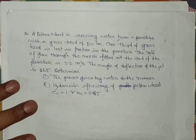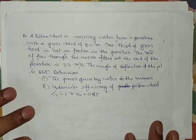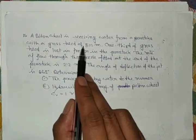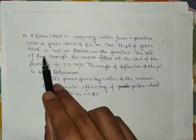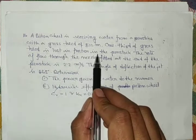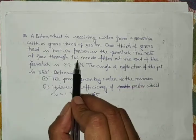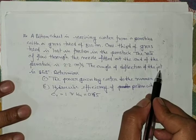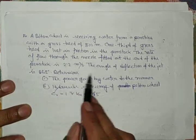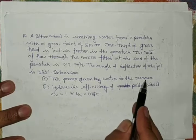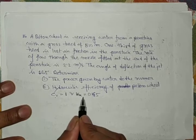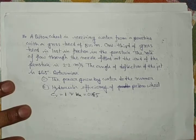Dear students, today we will discuss a few numericals on Pelton wheel. A Pelton wheel is receiving water from a penstock with a gross head of 510 meters. One third of the gross head is lost in friction in the penstock. The rate of flow through the nozzle is 2.5 m³/s, the angle of deflection of the jet is 165°. Determine power given by water to the runner and hydraulic efficiency, if Cv=1 and speed ratio Ku=0.45.